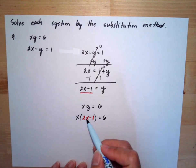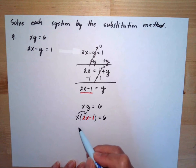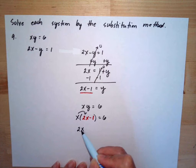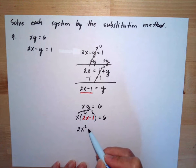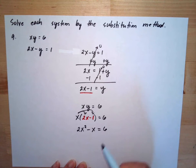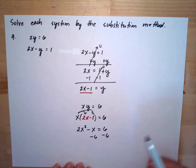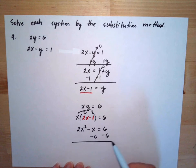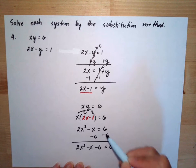Then I will distribute. x multiplied by 2x will be 2x squared, and x multiplied by negative 1 will be negative x, equal to 6. Then I will subtract 6 from both sides so that the right side will be 0, giving us 2x squared minus x minus 6 is equal to 0.